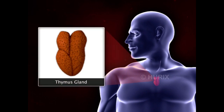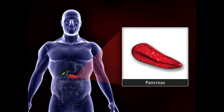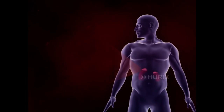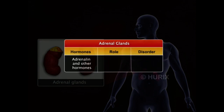The thymus is a small endocrine gland located underneath the breastbone. It is more active in early life, but after puberty it slowly begins to shrink. It is involved in development and is an important part of the defense mechanism. Insulin secreted by the pancreas helps in regulating blood sugar levels. Two adrenal glands, one on each kidney, secrete hormones such as adrenaline that play an important role during stress conditions, while other hormones control water and salt balance in the body.